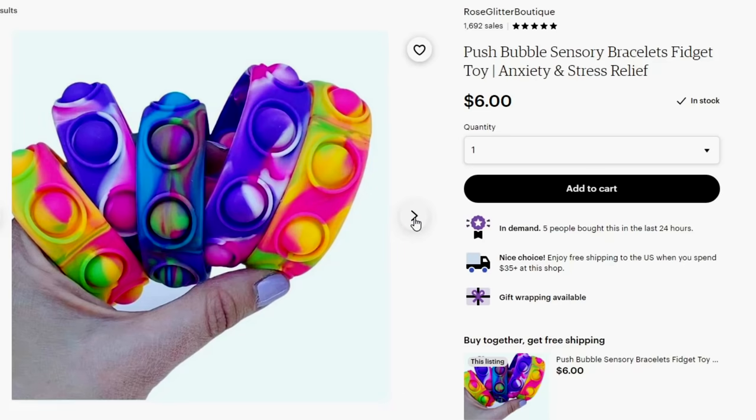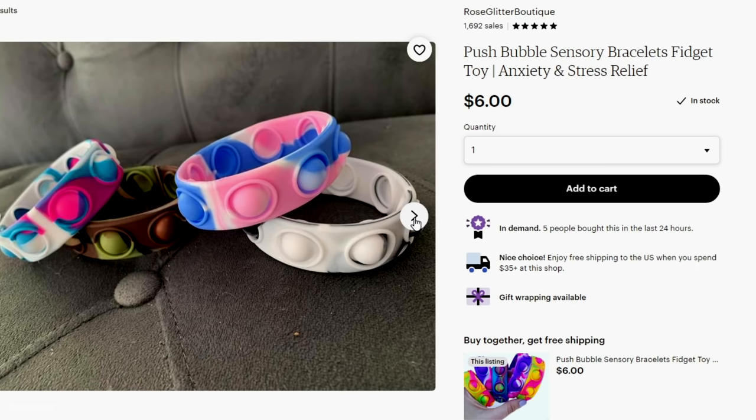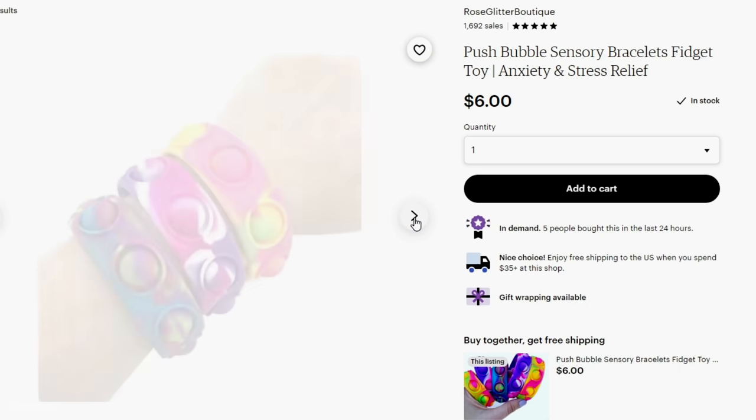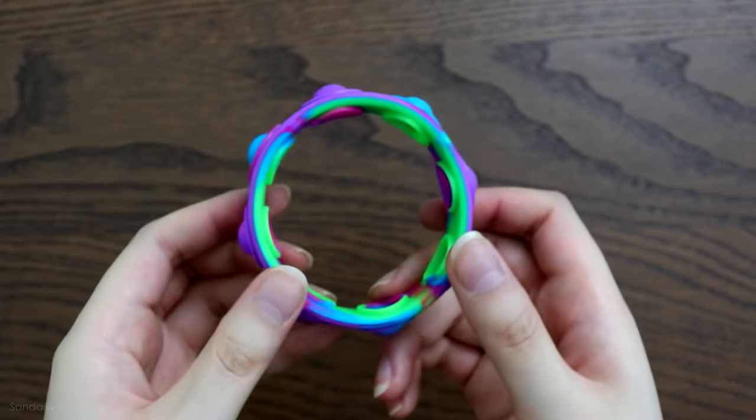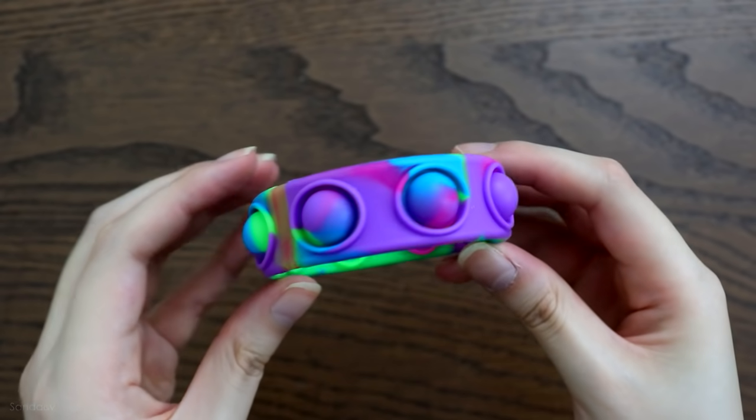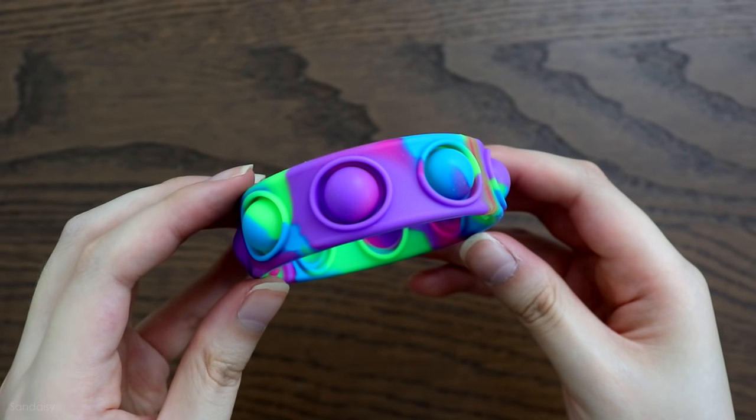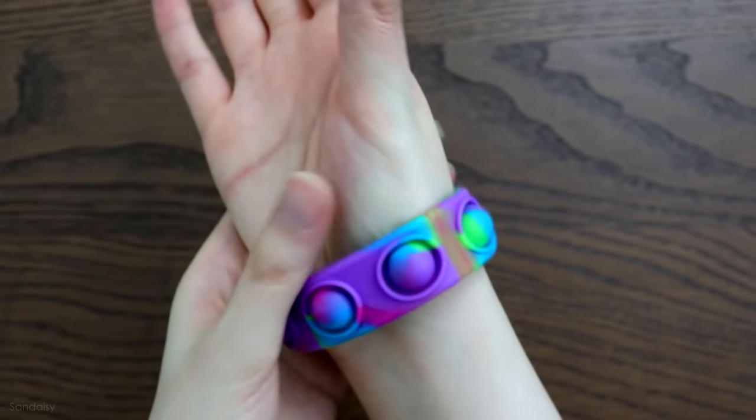Last but not least, this is another pop-it type of fidget toy and it's actually like a bracelet instead of a flat surface. Comes in a lot of different tie-dye styles. I do want to say that I prefer the flat ones than this one just because the bubbles are inconsistent when you're popping it. You can't really pop the bubbles well when you're wearing it but you can if you take it out. It's one of those fidget toys where you don't want it to be so obvious that it's a fidget toy since it's disguised as a bracelet.